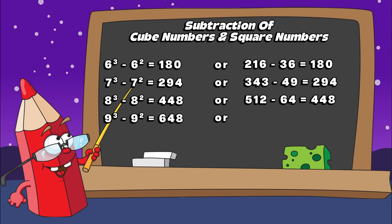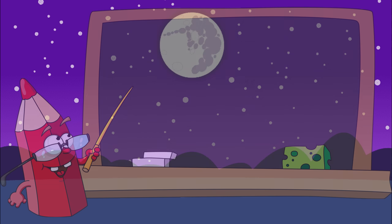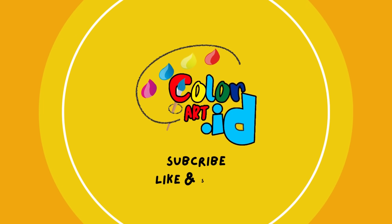Or seven hundred and twenty-nine minus eighty-one equals six hundred and forty-eight. Ten cubed minus ten squared equals nine hundred. Or one thousand minus one hundred is equals to nine hundred.